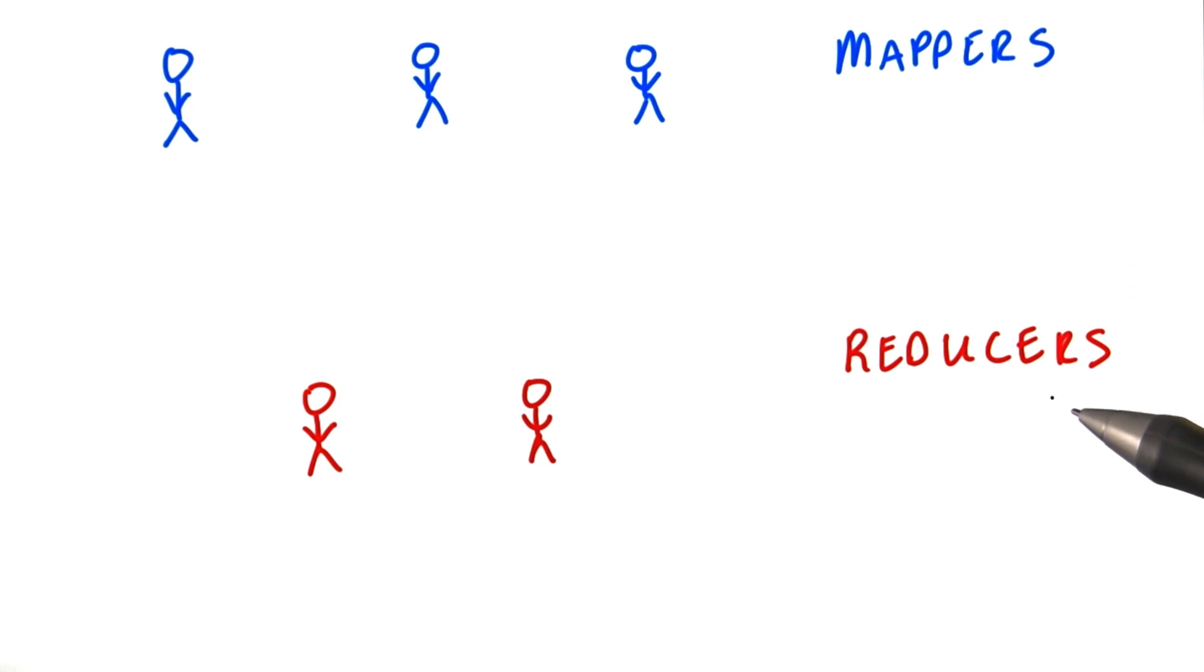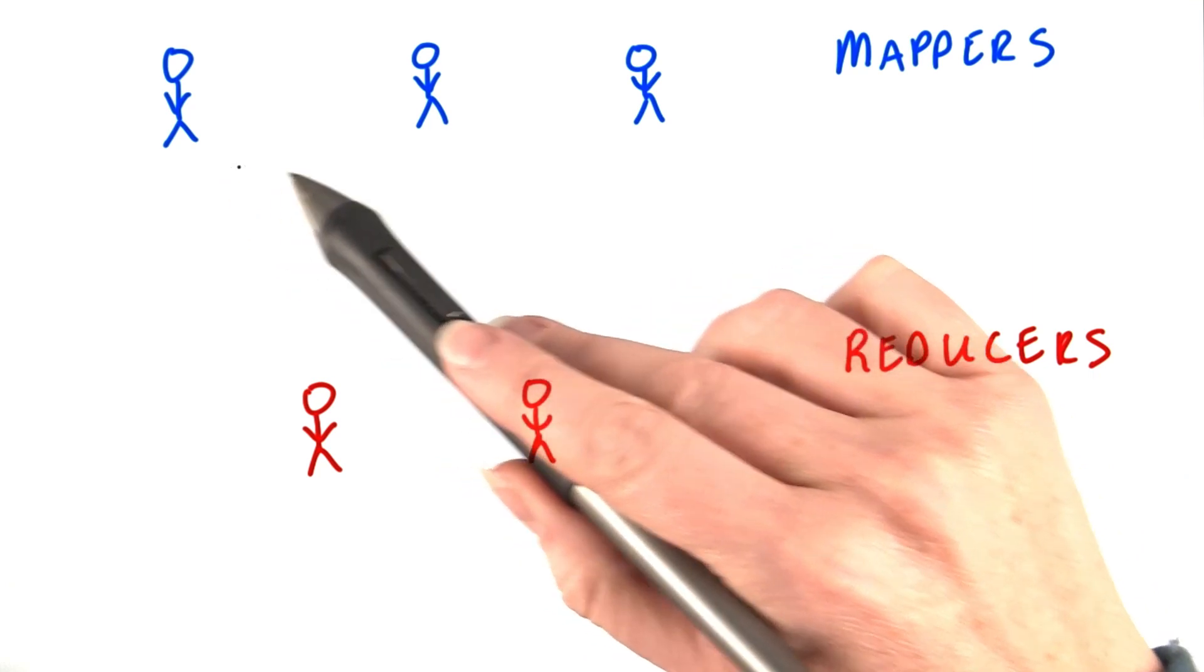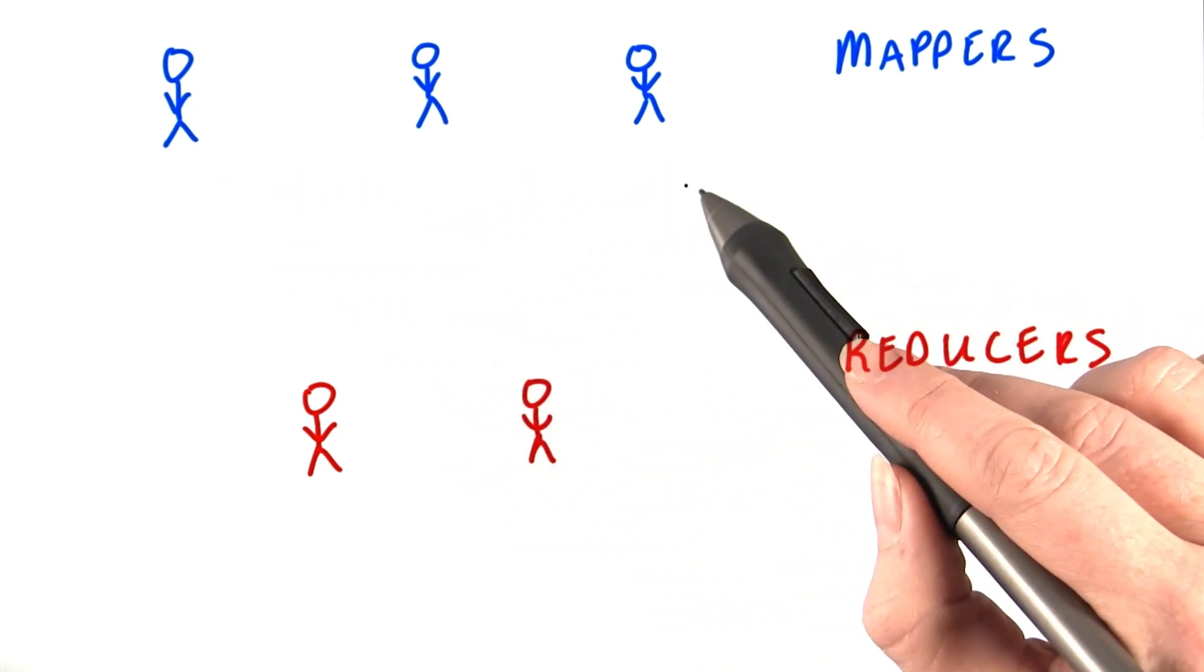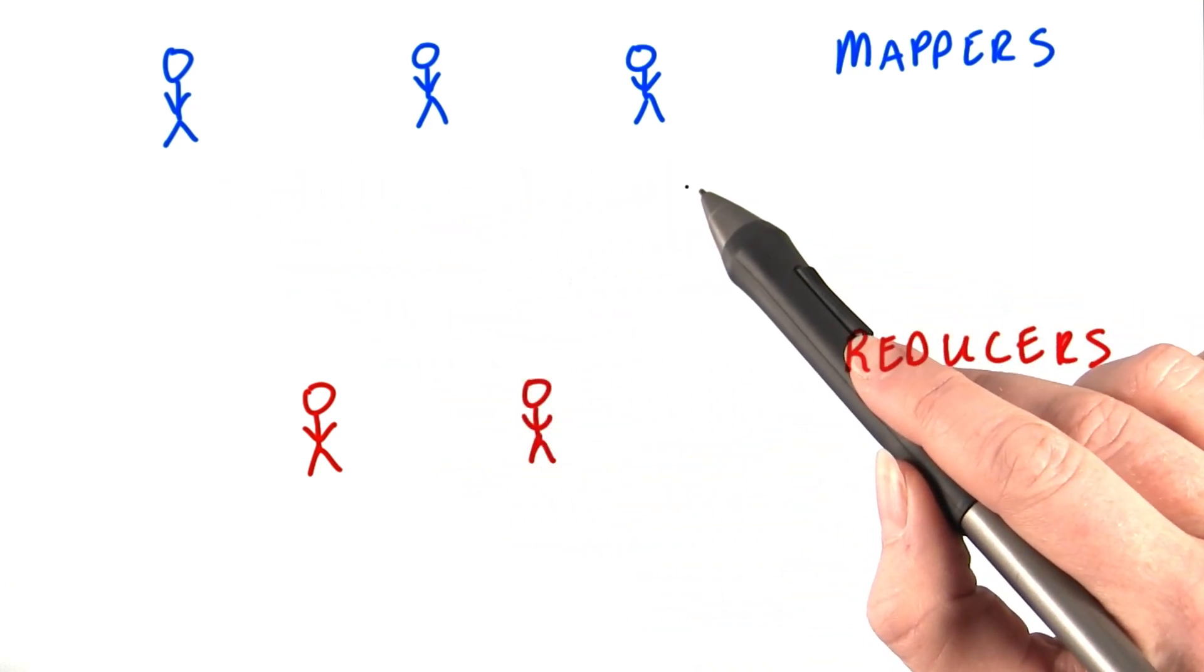Then we'll take the ledger, break it into chunks, and give each chunk to one of the mappers. That way all the mappers can work at the same time, each over a small fraction of the data.